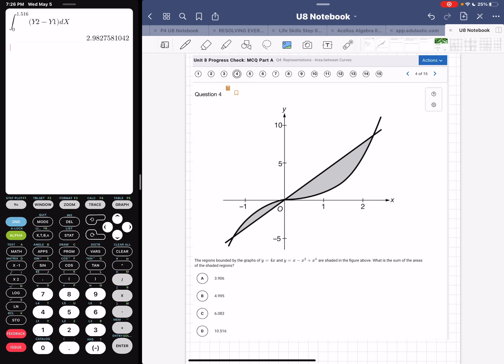What could be tricky about this one is that the functions are switching which one is on top and which one is on bottom. Alright, so here we go. It says the region bounded by the graphs by this guy and this guy are shaded in the thing above. What is the sum of the areas of the shaded regions?